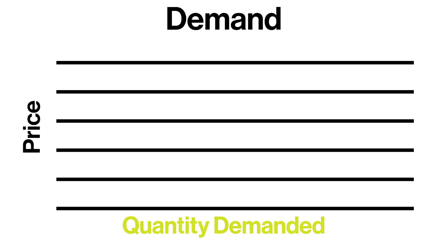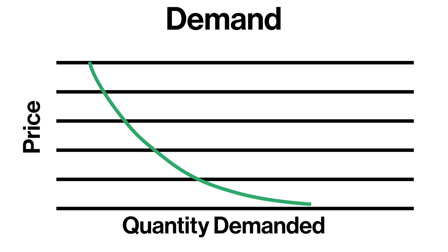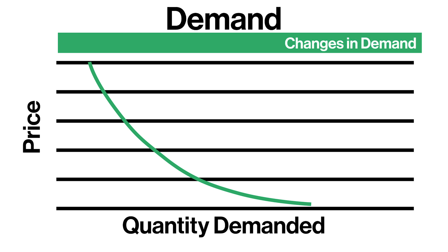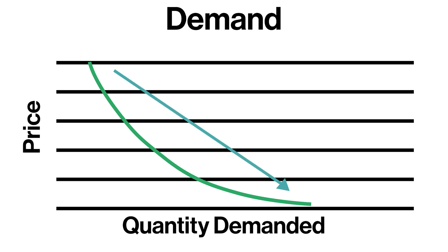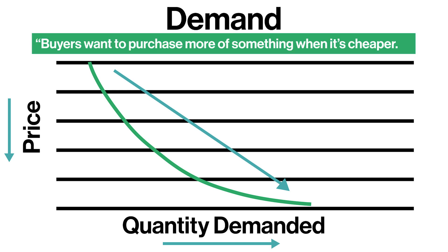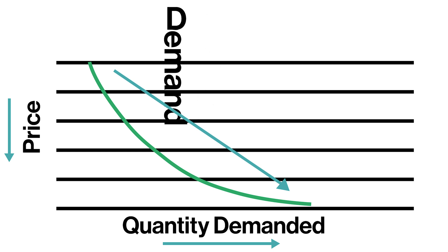Let's draw a graph to illustrate the law of demand. We have price along the y-axis and quantity demanded along the x-axis, then we have the most important part: the demand curve. It's important to differentiate between changes in quantity demanded and changes in demand. A change in quantity demanded is a change along the demand curve; a change in demand is a shift in the actual demand curve. The demand curve slopes downward because as price decreases, quantity demanded increases. Think of the D in demand as meaning down.